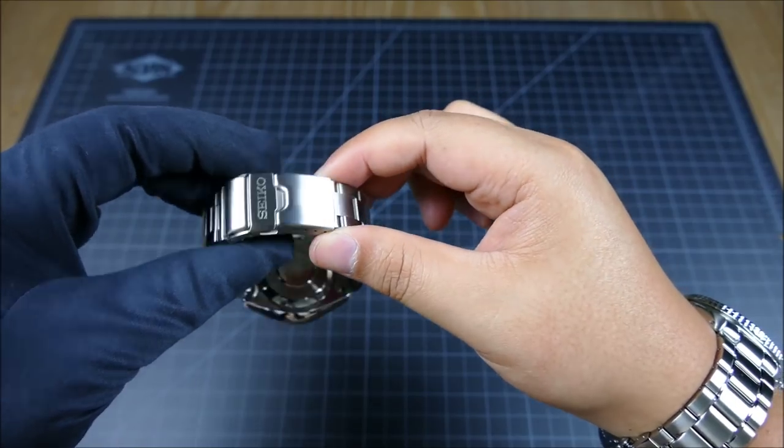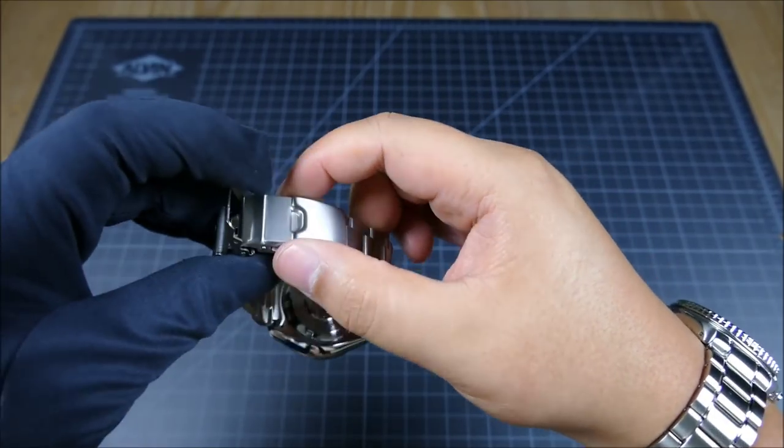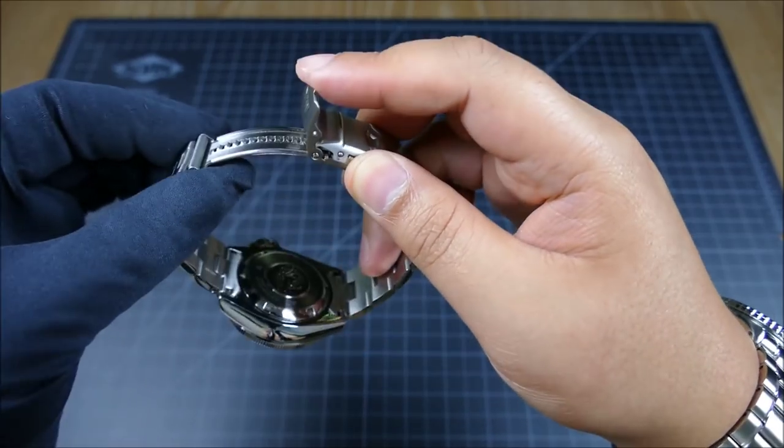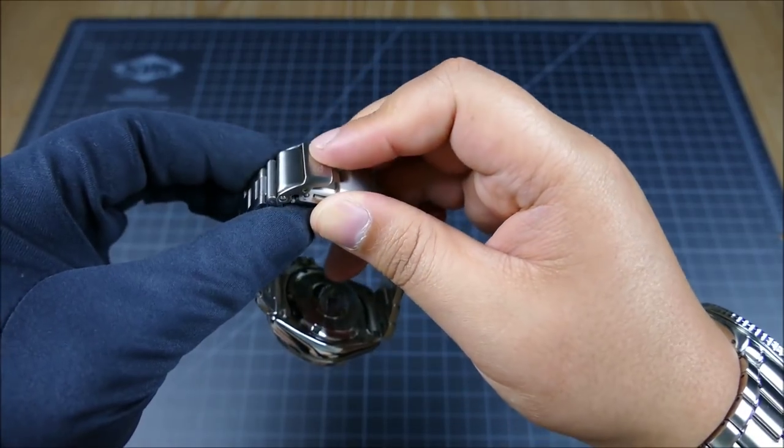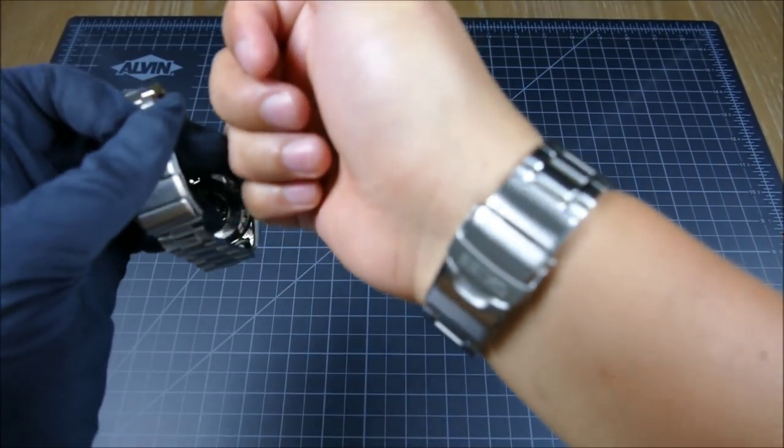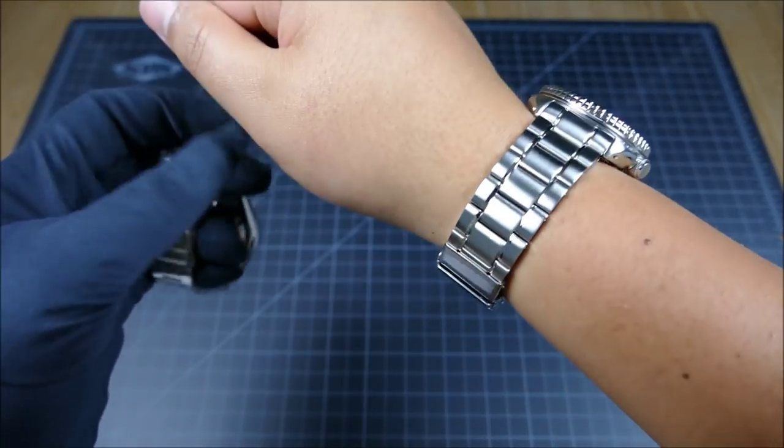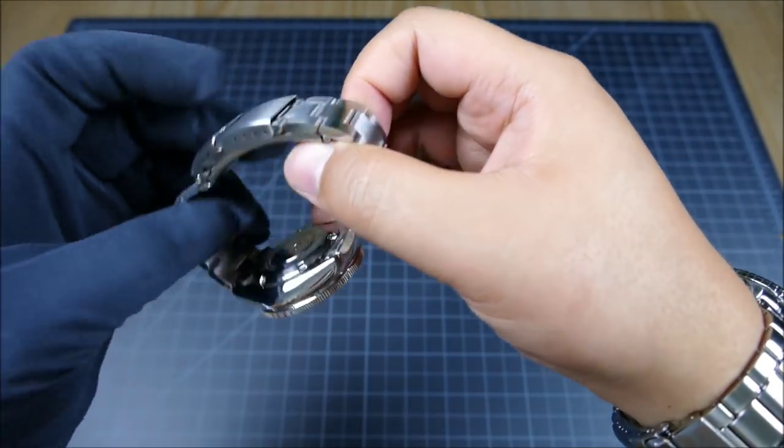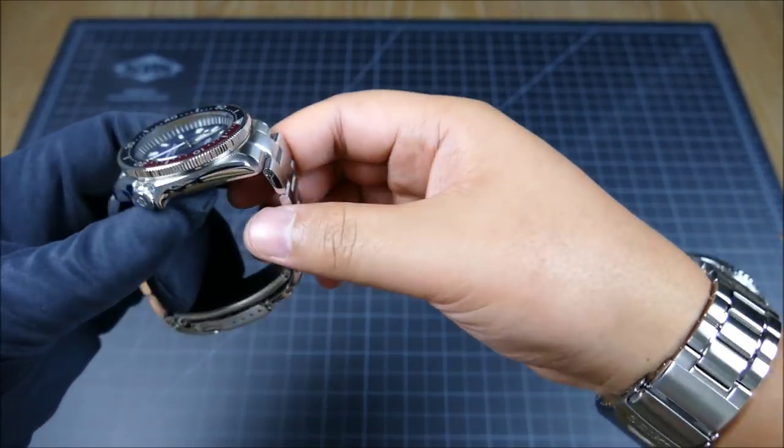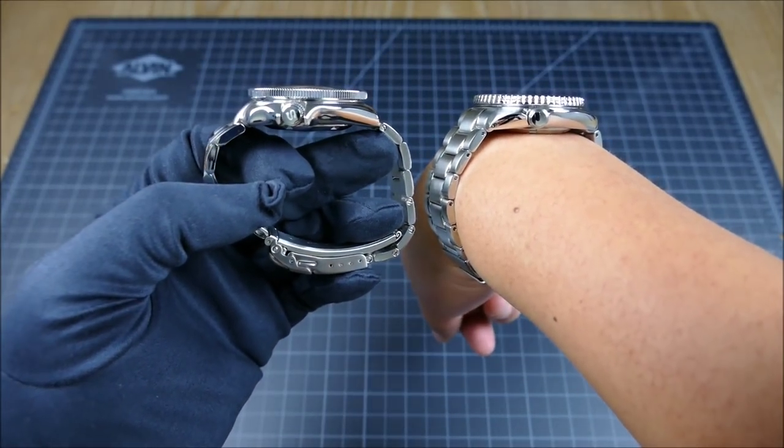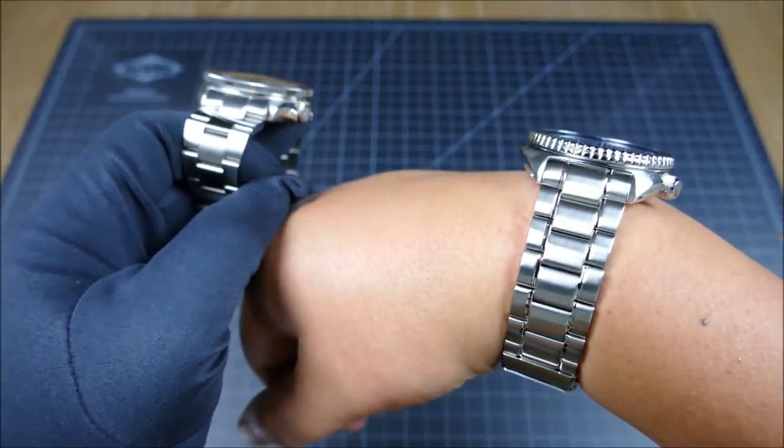Just a small update here: I actually did update the clasp to the Marine Master clasp, so it has the ratcheting, which is pretty cool. The dive extension is very nice. That would be a really interesting upgrade for the Turtle at some point, but I would need to find an aftermarket bracelet that tapered down to 18 millimeters.